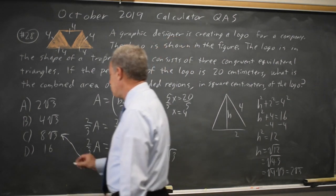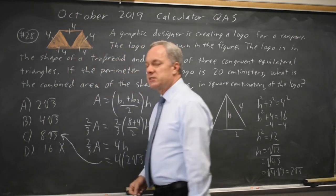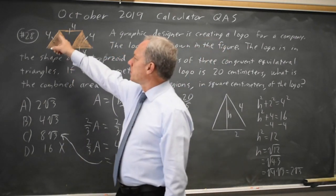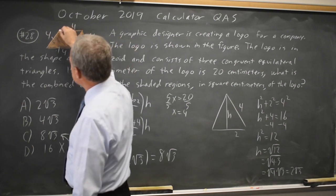So the solution will be less than 2 thirds of 24, which is less than 16. That rules out choice 16.